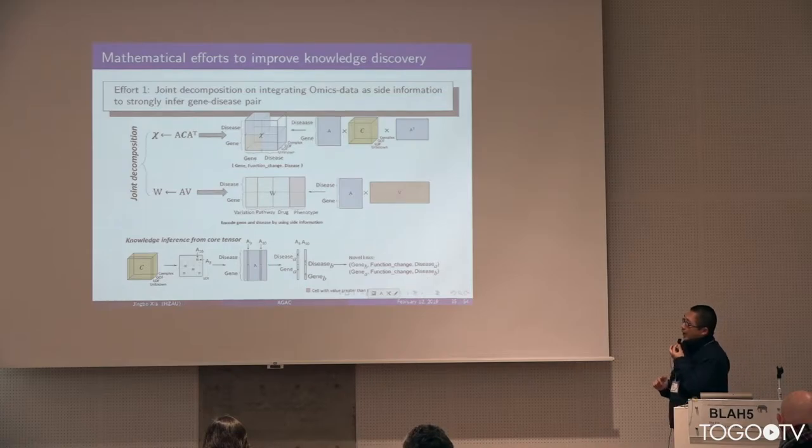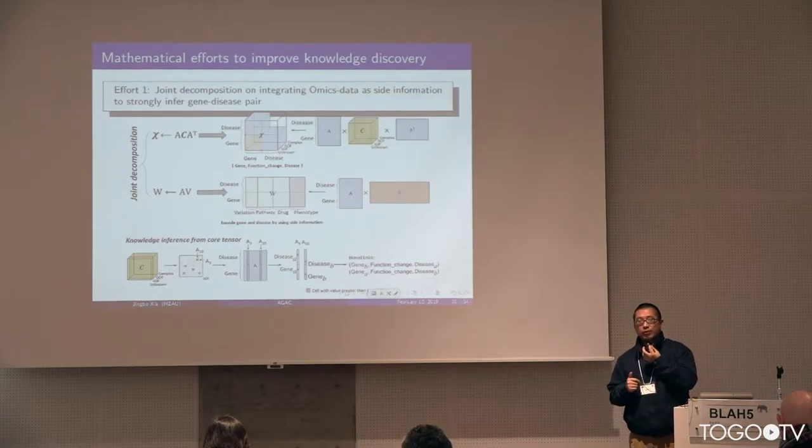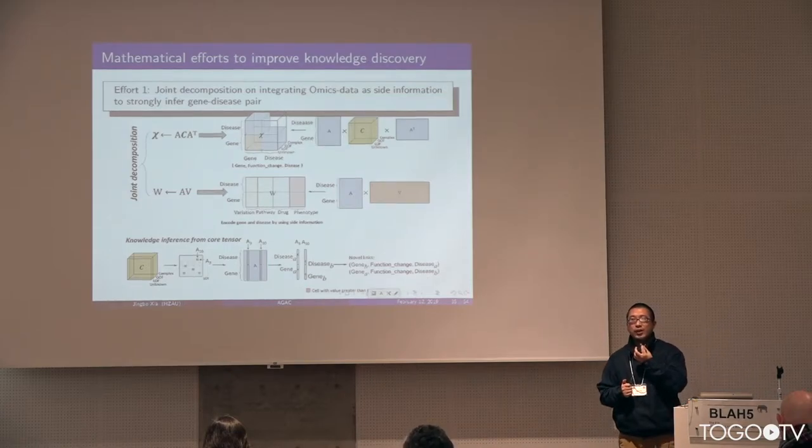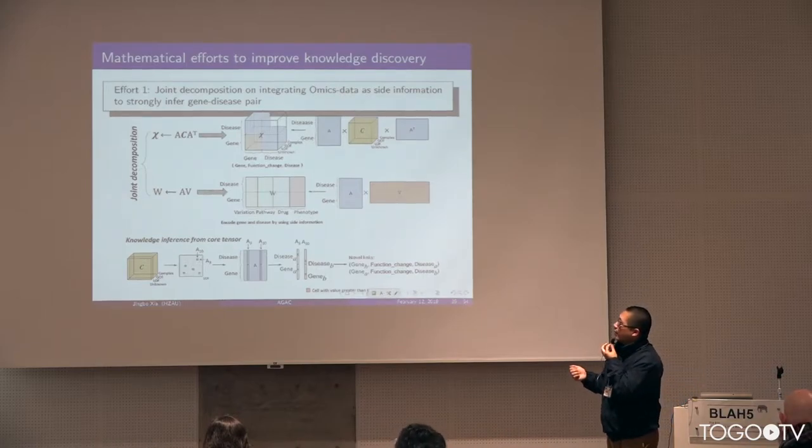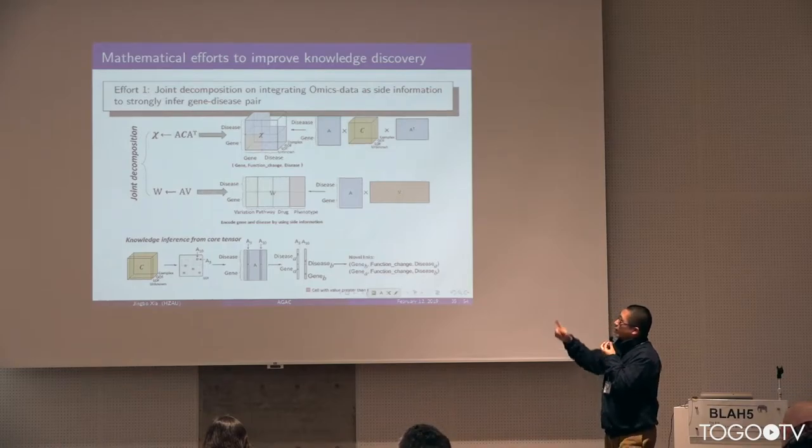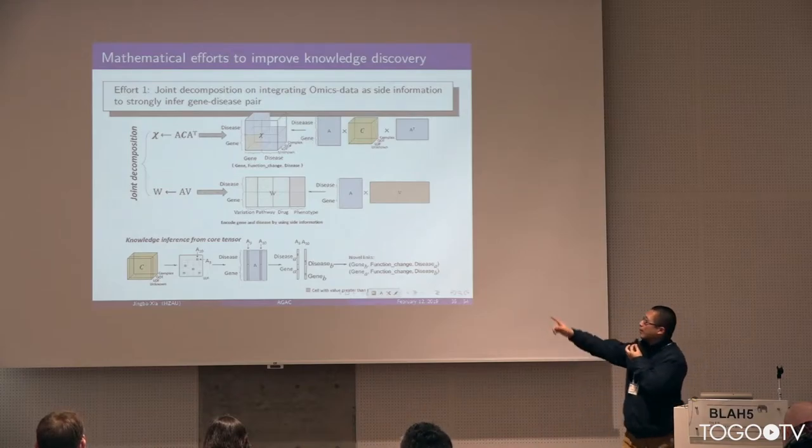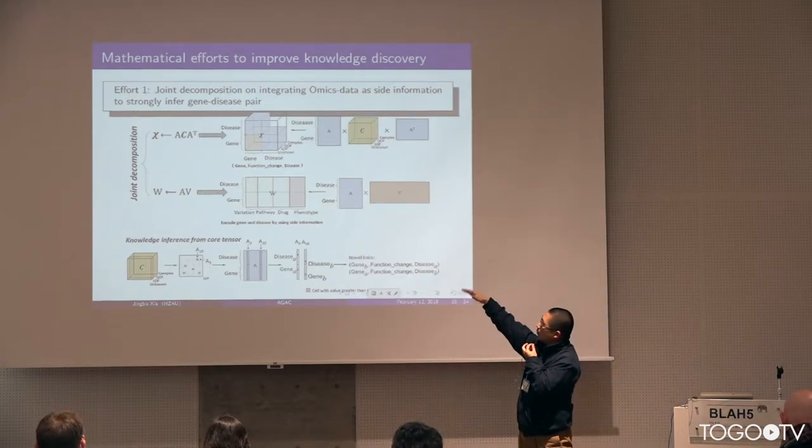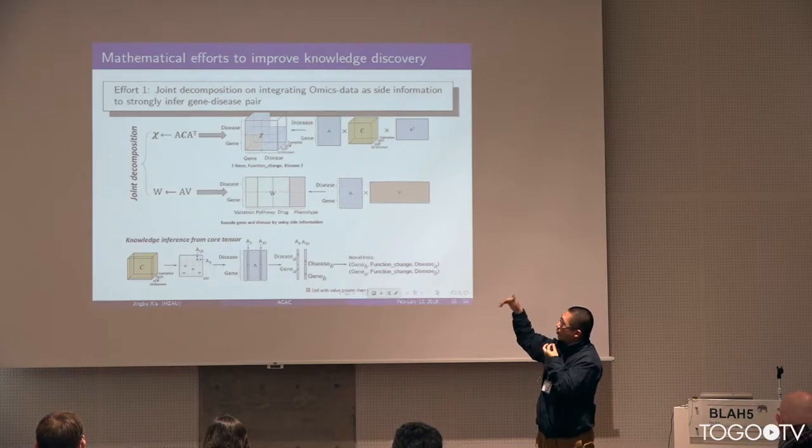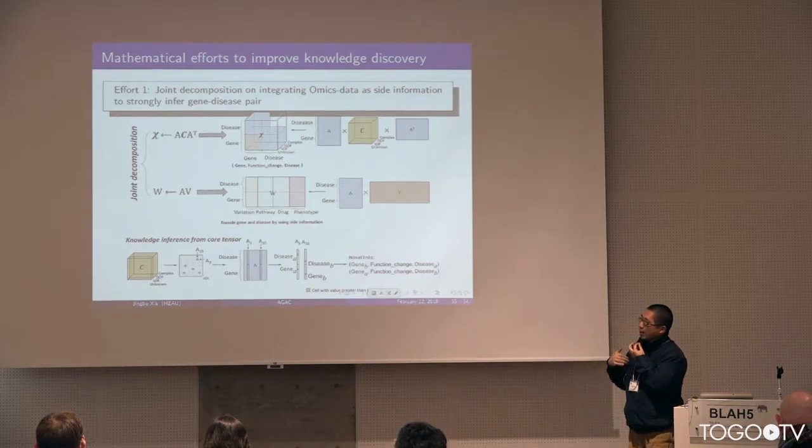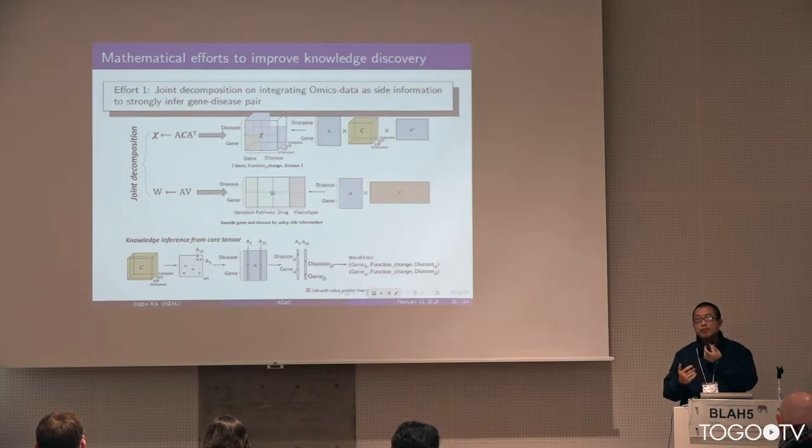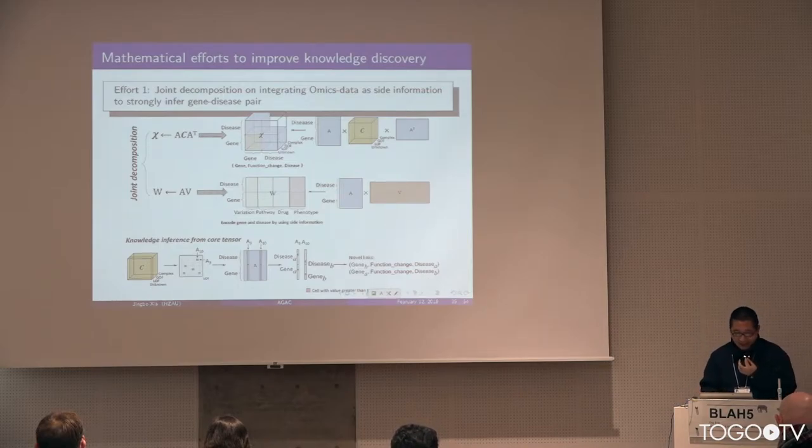The second, we are doing an enhancement of our knowledge inference by using a joint decomposition of tensor and the matrix. The tensor is the typical RASCO tensor. And the matrix is some information of different multi-omics data, including pathway, drug, phenotype or something. This is something very interesting.